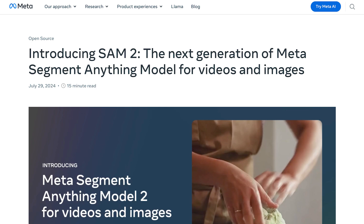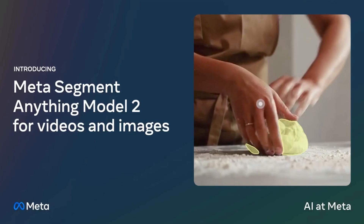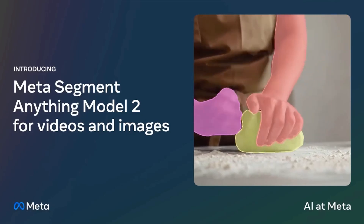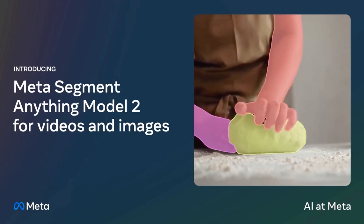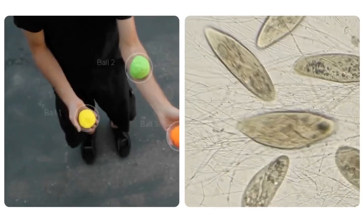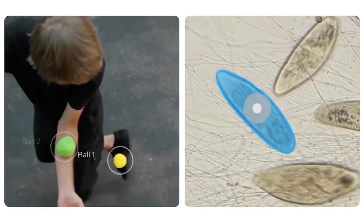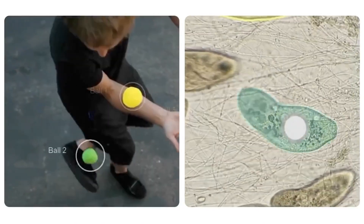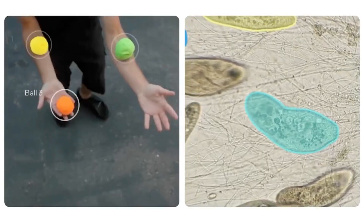Meta AI has been super busy lately, dropping state-of-the-art AI models left and right, their latest being their new Segment Anything Model 2, an AI model that can segment any object in any image or video in real time.